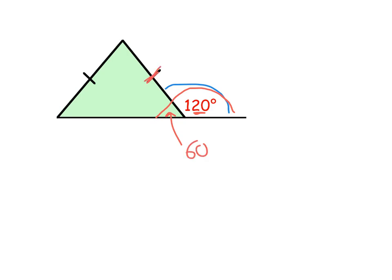Now we have an isosceles triangle, which means that these two angles are the same. So if that's 60 there, that must be 60. And to find the last angle, I just need to do 180 minus 60 minus 60, which is also 60. So all the angles are 60, which means that's an equilateral triangle.